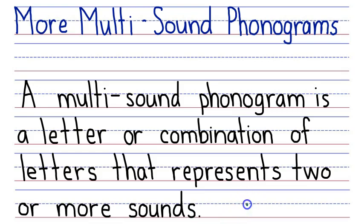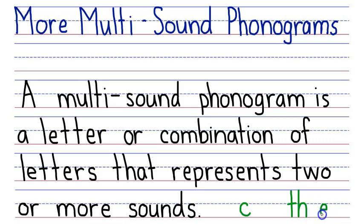For example, the phonogram C makes two sounds and so it is a multi-sound phonogram. For another example, the phonogram TH is a multi-sound phonogram because it makes two sounds: TH and TH. Similarly, the phonogram EAR is a multi-sound phonogram because it makes three sounds: EAR, AIR, and ER.